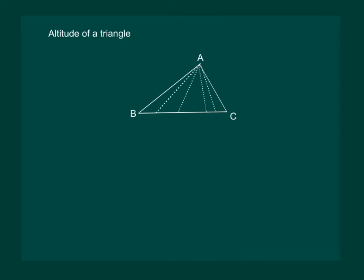We know that from any vertex we can draw a number of lines on the opposite side of that vertex. But the line that will give us the height of the triangle will be perpendicular to the opposite side, and such a line is called the altitude of the triangle.